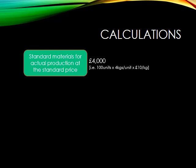First, let's calculate our standard materials for actual production at the standard price — that's our standard cost for actual output. This is going to be one hundred units at four kilograms per unit at ten pounds per kilogram, so we should have incurred a cost of four thousand pounds for the materials used in production.